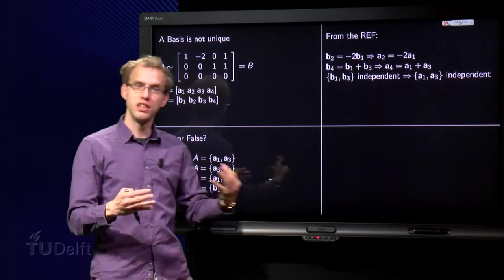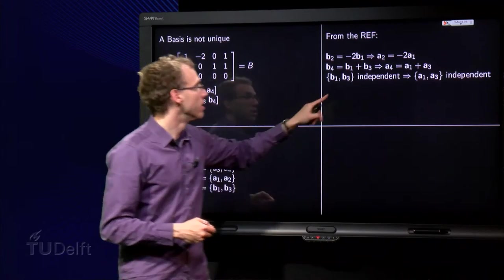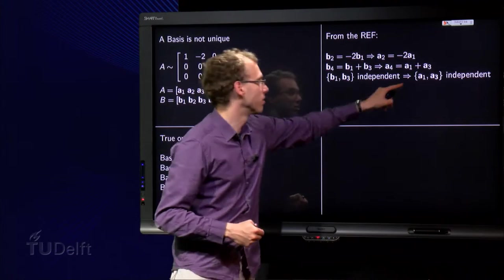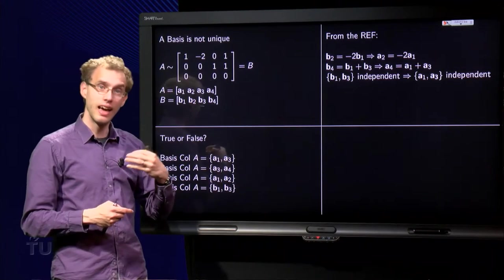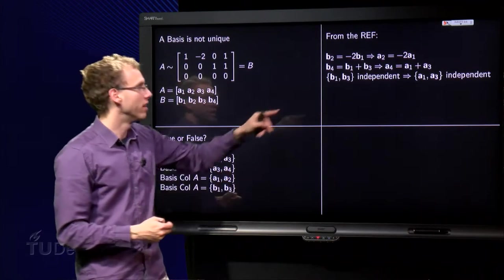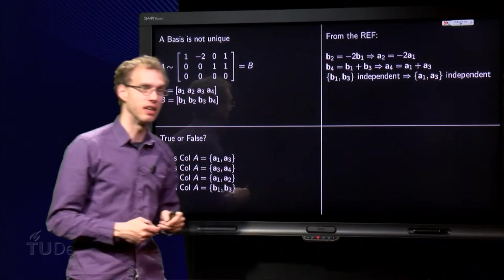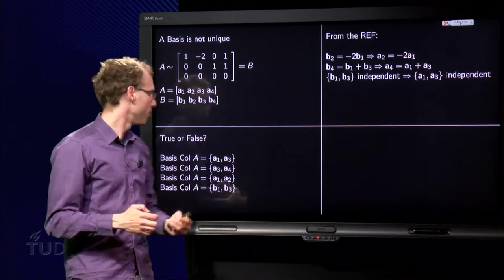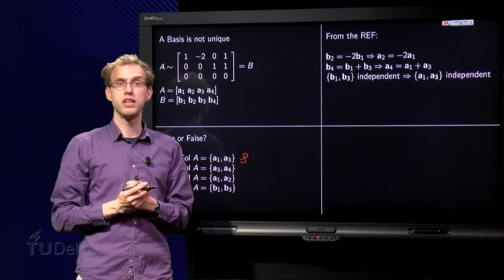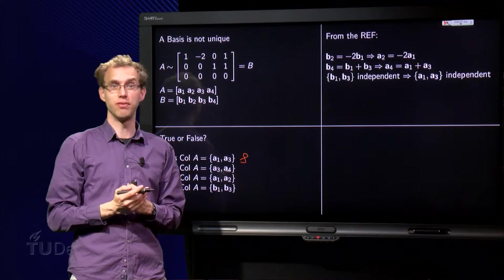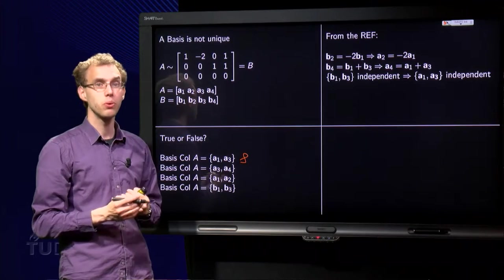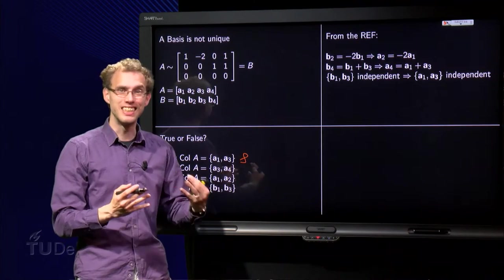So, since the set consisting of B1 and B3 is independent, the set consisting of A1 and A3 is also independent. And A2 and A4 are linear combinations of A1 and A3. So we know that this one is correct. A basis of col A is a set consisting of A1 and A3, because it is independent and spans. Col A is basically the standard choice.